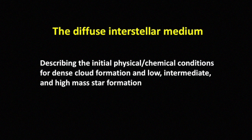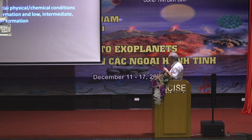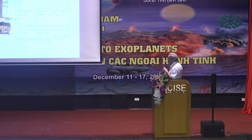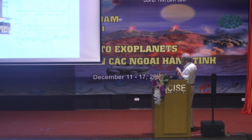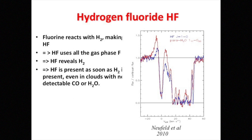Diffuse interstellar gas describes the initial physical and chemical conditions for dense cloud formation — this is the first step in the evolution of molecular clouds. The Herschel satellite has shown the presence of OH+, H2O+, and H3O+ in these gases — the molecules formed through ion-neutral reactions I was describing. Also hydrogen fluoride and the carbon hydrides such as CH+ were detected.